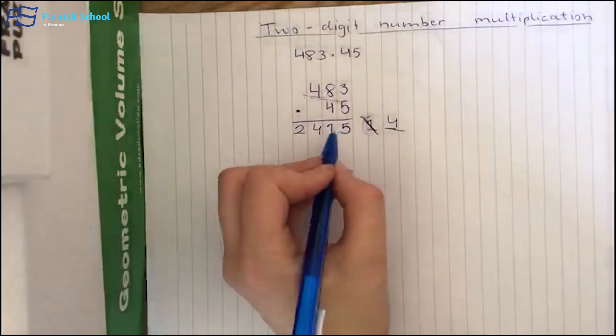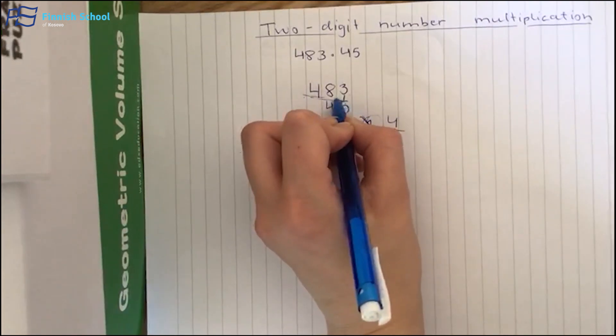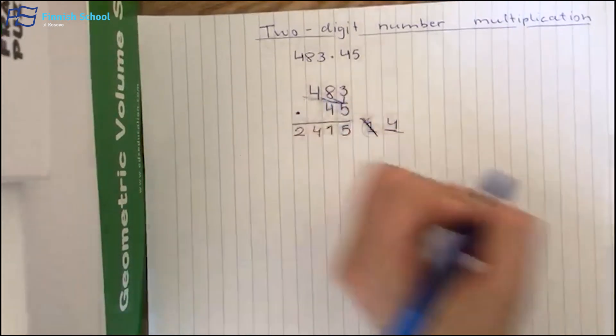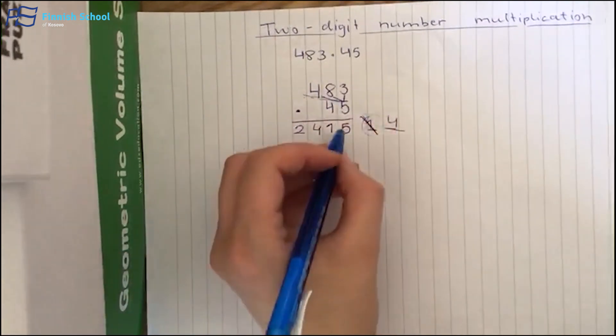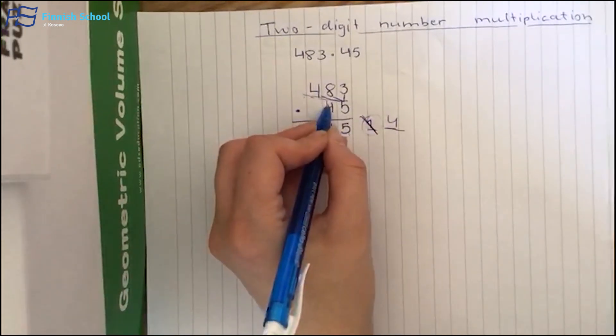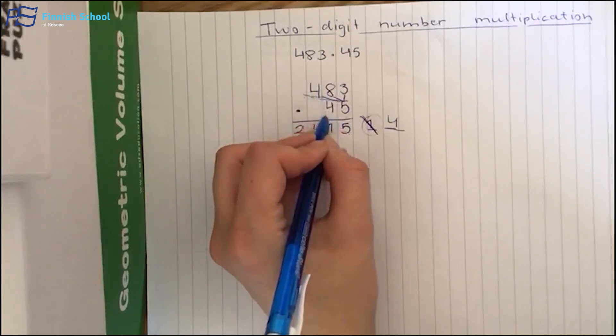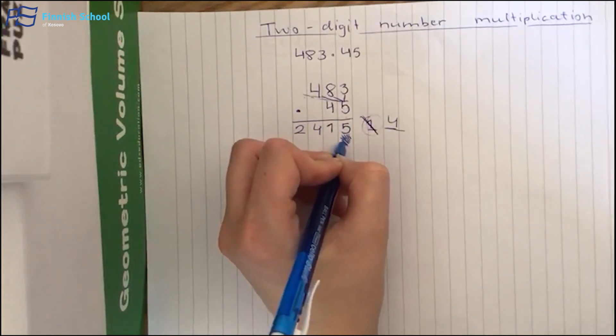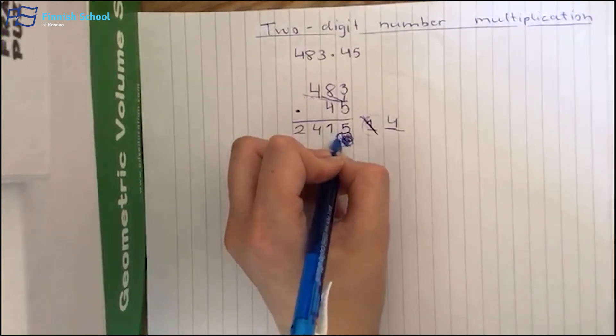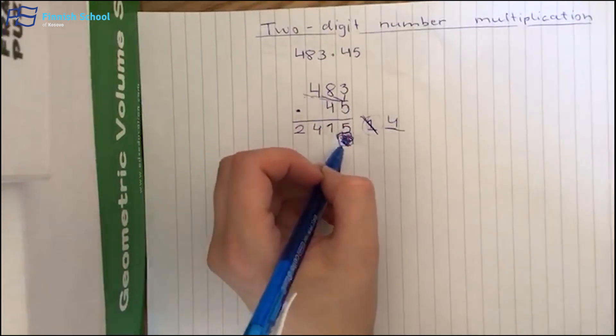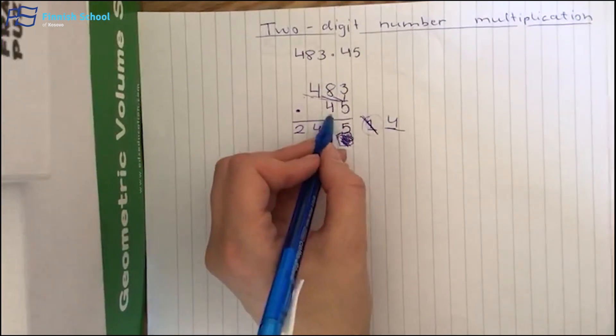Okay, now we have already multiplied 5 with all of these. Now it's time with number 4. And now we have to remember, because 4 is here. So let's make like this. Let's recolor the first one. So we won't add anything under 5. So let's start.